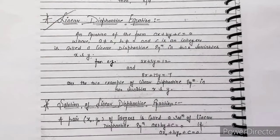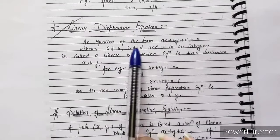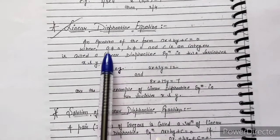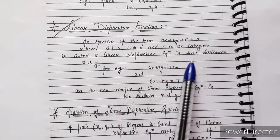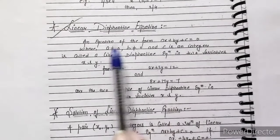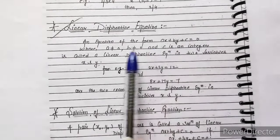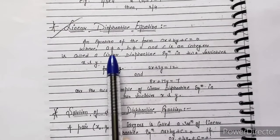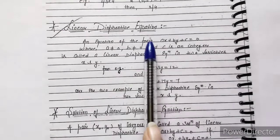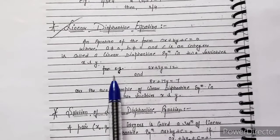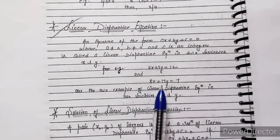Hello everyone. In this lecture, we will discuss linear Diophantine equations, and we will see some related examples of which equations will have a solution and which will not. A linear Diophantine equation is an equation of the form ax plus by plus c equals 0, where a and b are non-zero and c is an integer. This is called a linear Diophantine equation in two variables x and y. Examples: 2x plus 3y equals 12, or 8x plus 17y equals 7.